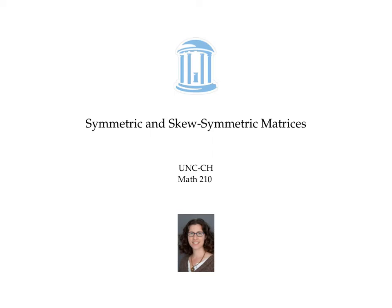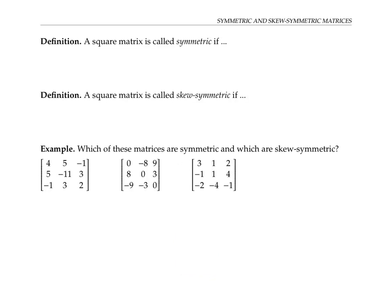This video is about symmetric and skew symmetric matrices. A square matrix A is called symmetric if A transpose is the same as A. And a square matrix A is called skew symmetric if A transpose is the negative of A — that is, its entries are the same as A's entries but with negative signs in front of them all.